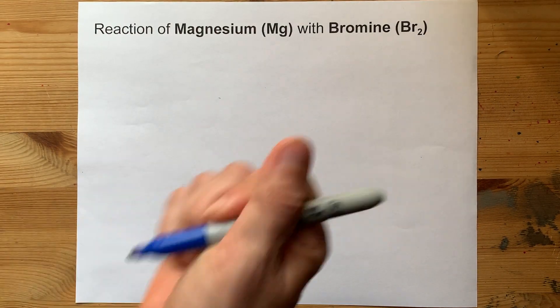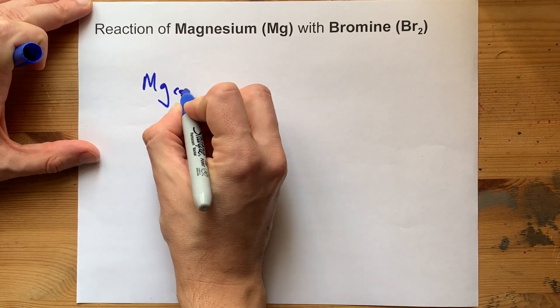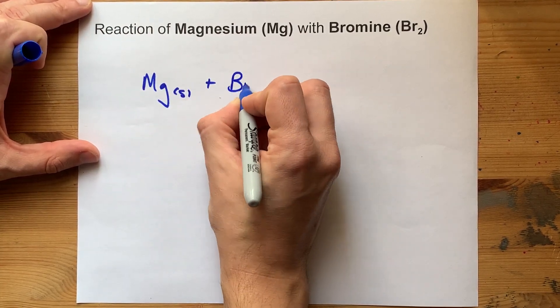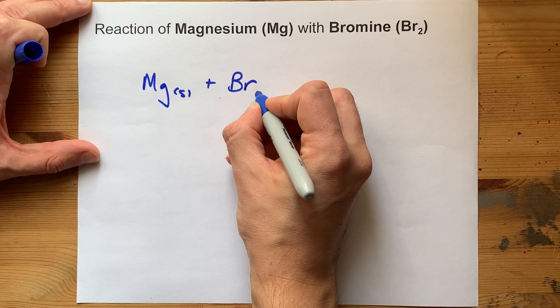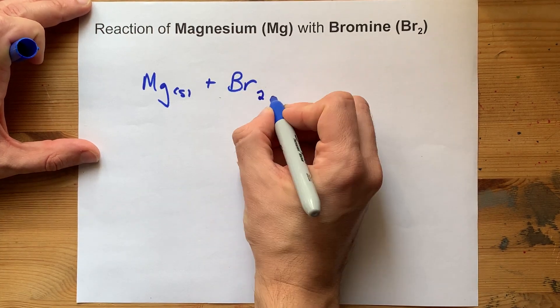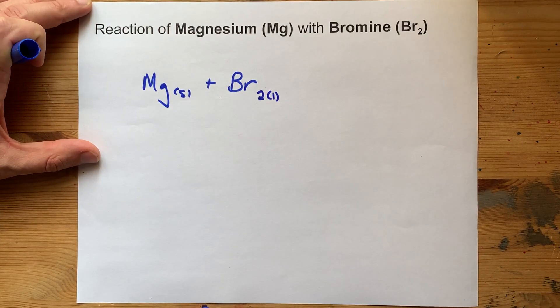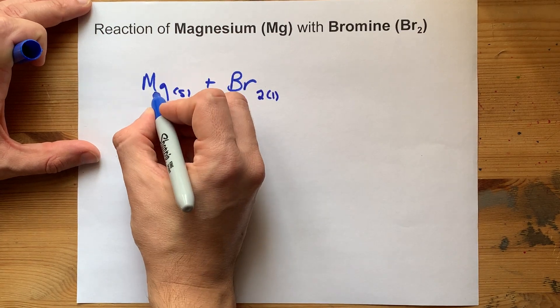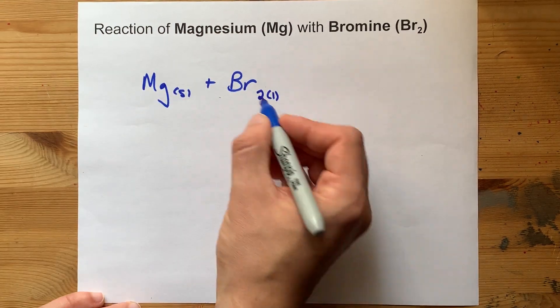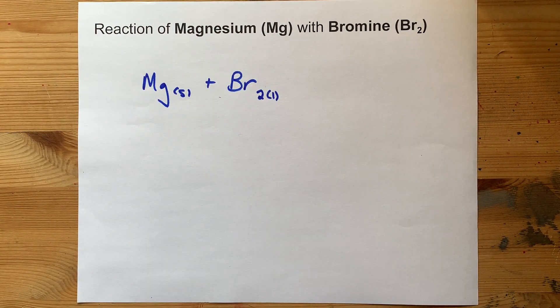When you react solid magnesium metal with bromine, now bromine comes as a molecule of two atoms and it happens to be a liquid at room temperature, the magnesium will lose electrons and the bromine will gain those electrons.